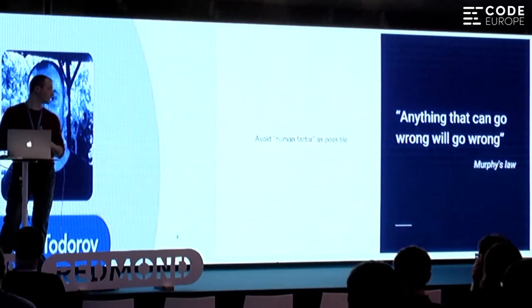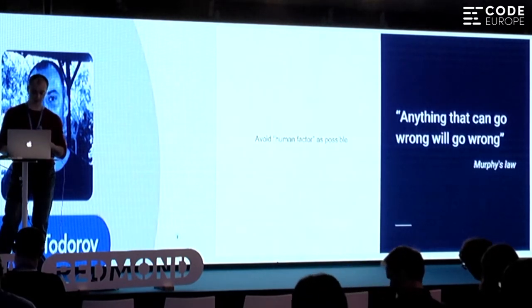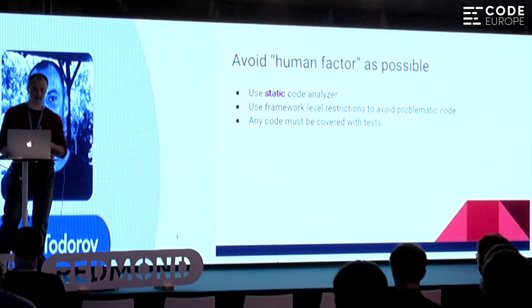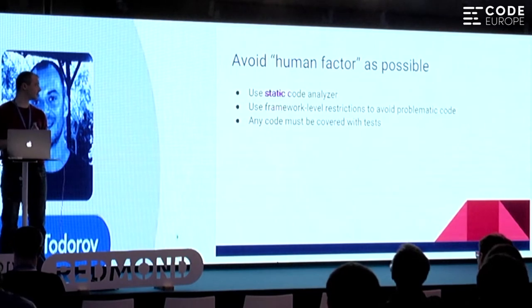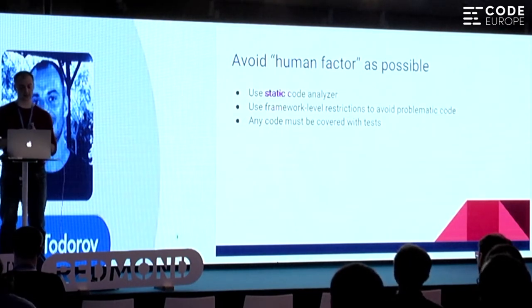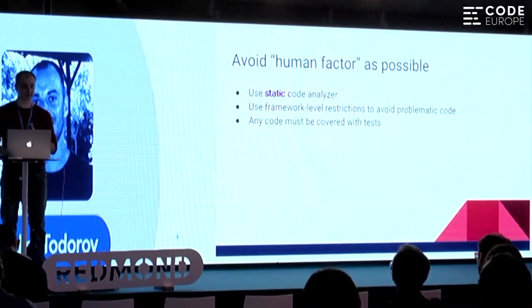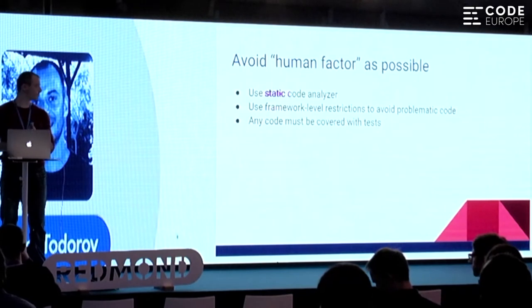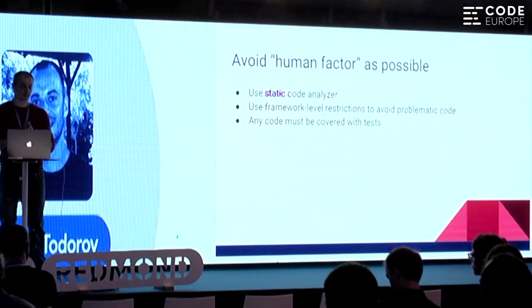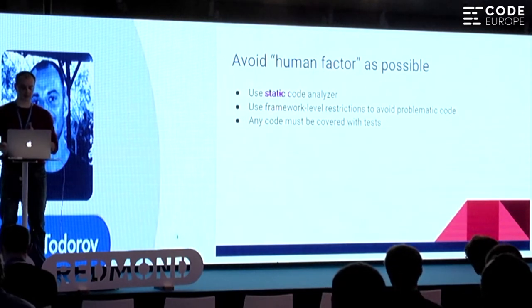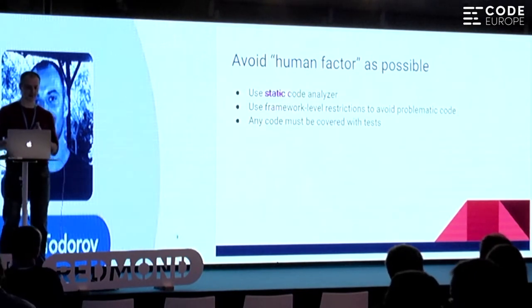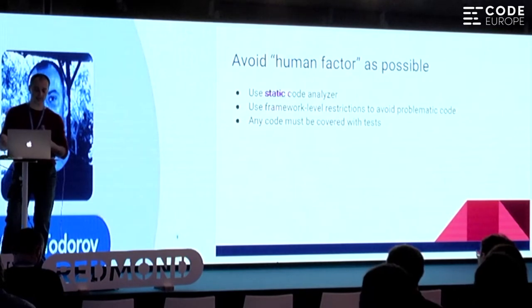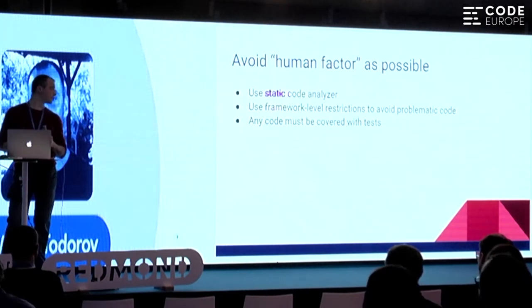So what can we do about it? How can we avoid the human factor? It's much easier to work with strict rules and strict positions. It makes sense to use static code analyzers — for Ruby, the most popular is Rubocop. Use framework-level restrictions to avoid problematic patterns: documentation, strict interfaces, strict type responses. And of course, anything you write must be covered with tests.